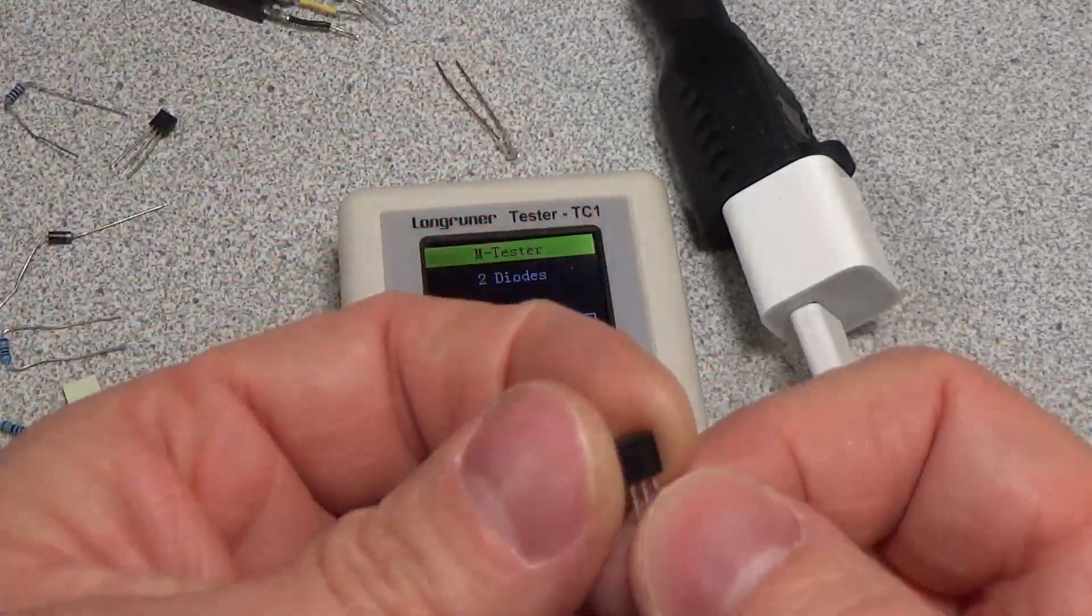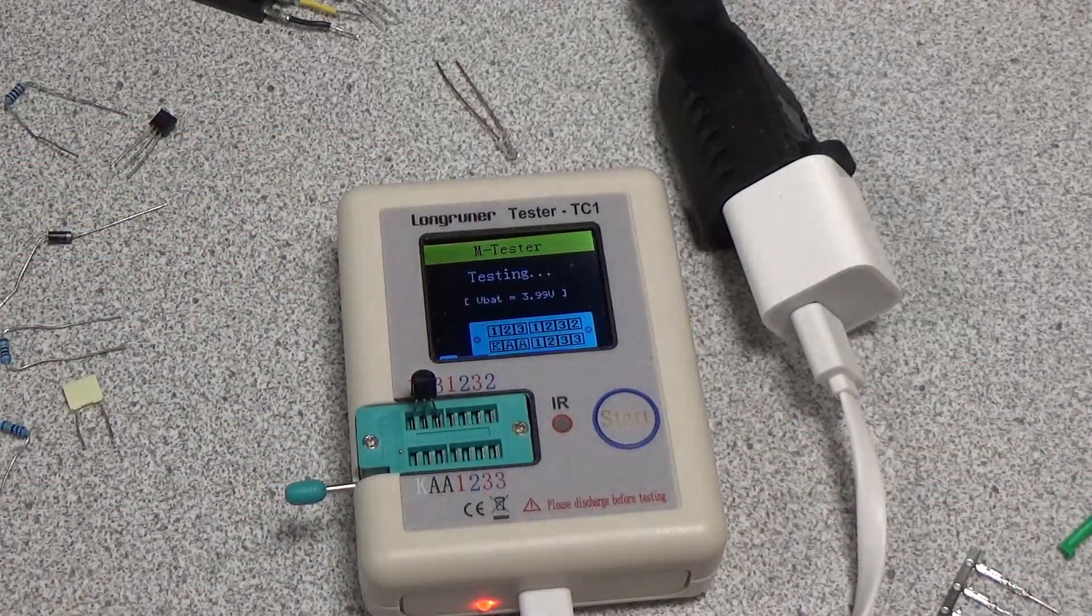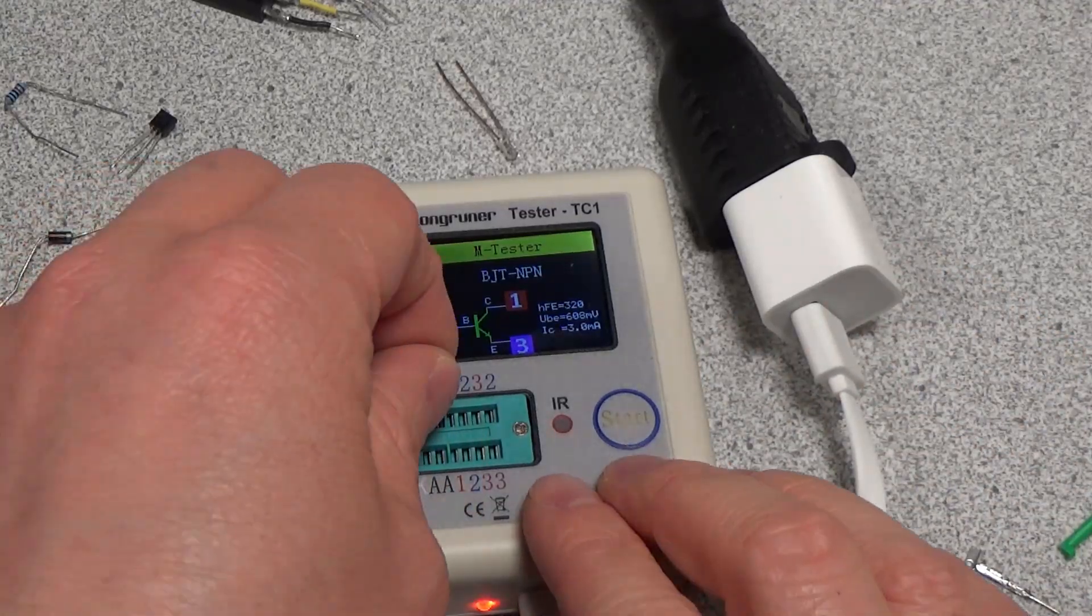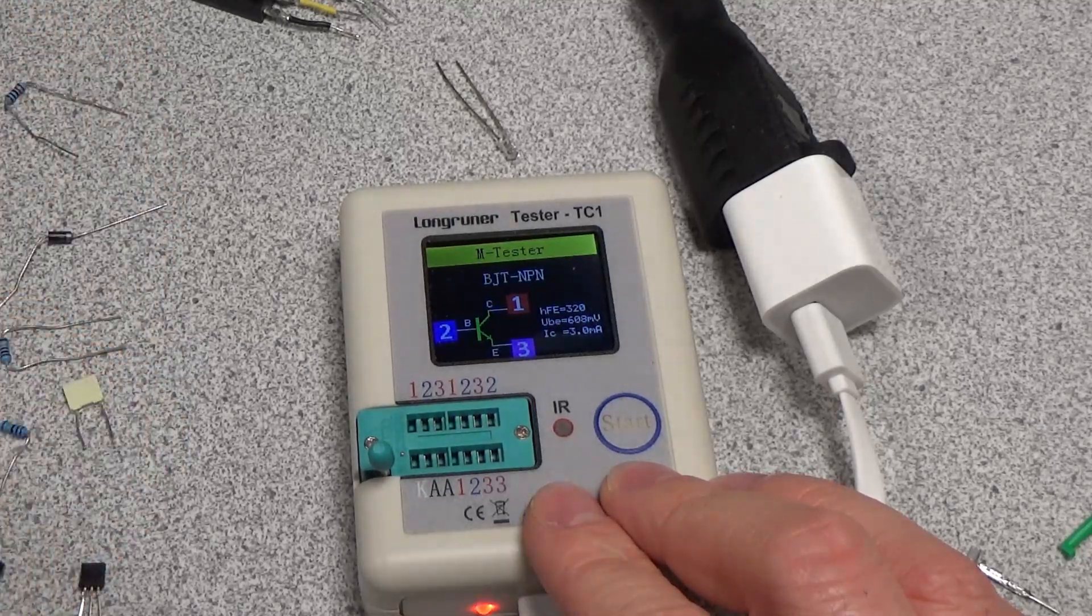Let's try a BC337. This is another conventional NPN transistor. All right, that it got. NPN BJT. We already tried our JFET.